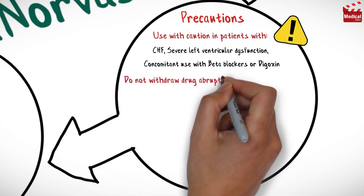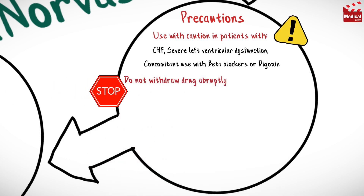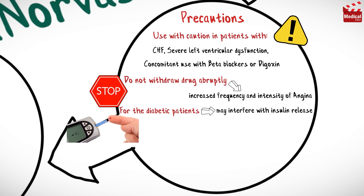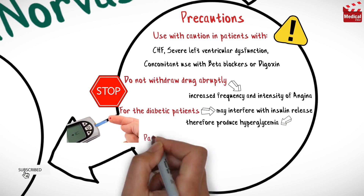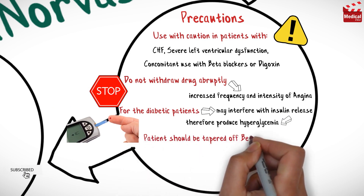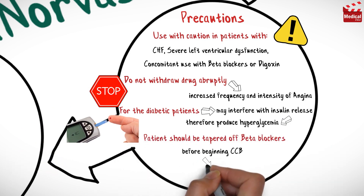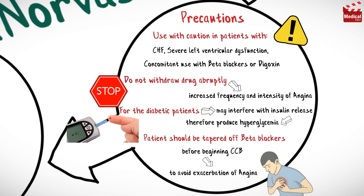Do not withdraw the drug abruptly, as this may result in increased frequency and intensity of angina. For diabetic patients, amlodipine may interfere with insulin release and therefore produce hyperglycemia. Patients should be tapered off beta blockers before beginning calcium channel blockers to avoid exacerbation of angina due to abrupt withdrawal.